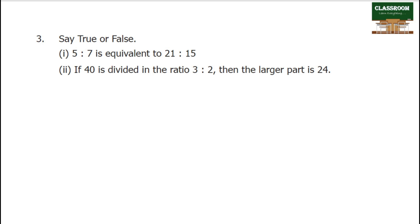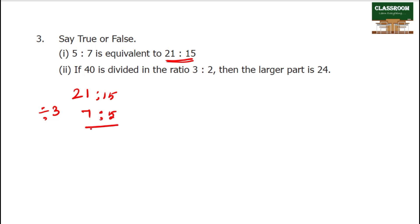Next: say true or false. 5 is to 7 is equal to 21 is to 15. We simplify: 3 times table — 3 is 21, 3 is 15. So simplified is 7 is to 5. But the question says 5 is to 7, so the answer is false.